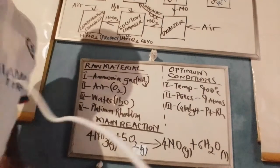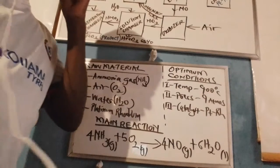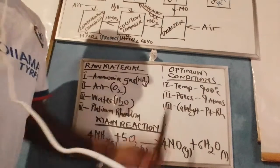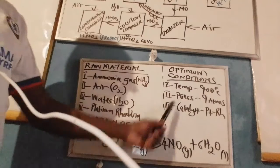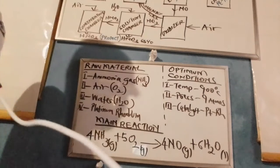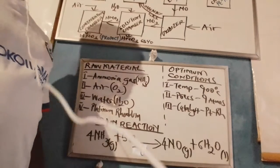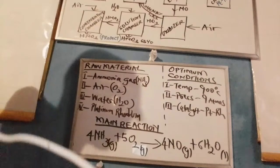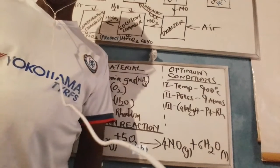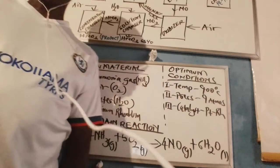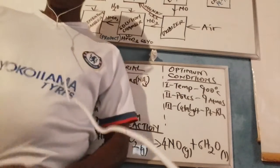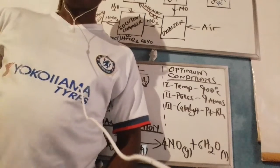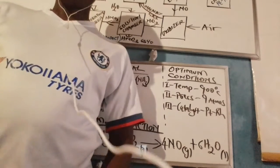We have three optimum conditions for the Ostwald process: temperature of 900 degrees Celsius, pressure of 9 atm, and the catalyst is platinum-rhodium. An optimum condition is the condition of highest product yield, using the least possible effort and taking the shortest time possible.